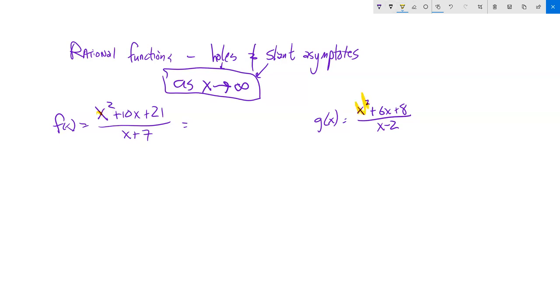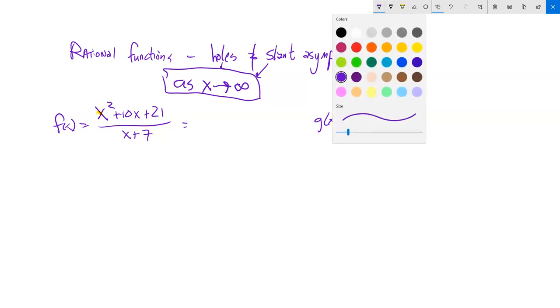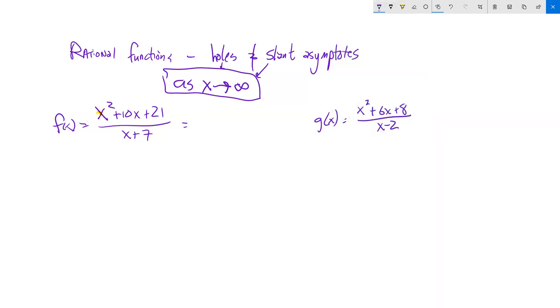And so does this one, x squared over x. So I don't have a horizontal asymptote, is what that tells me. So let me dig in a little bit more.